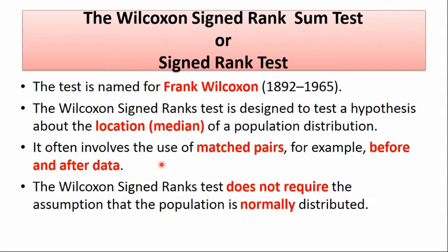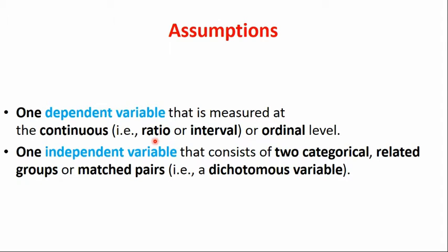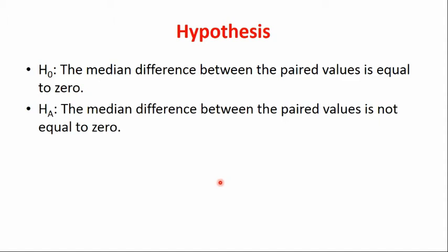In a paired sample t-test, the assumption is that there should be no outlier and the differences between before and after should be normally distributed. But for the Wilcoxon test there is no such assumption. There is one dependent variable measured at continuous — that is ratio or interval level — or ordinal scale, and one independent variable consisting of two categorical related groups, a matched pair, which is a dichotomous variable.